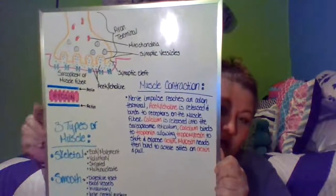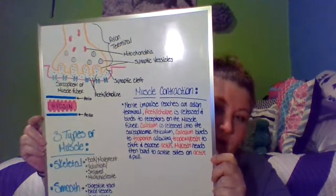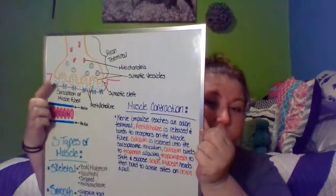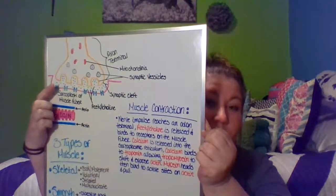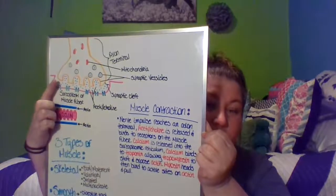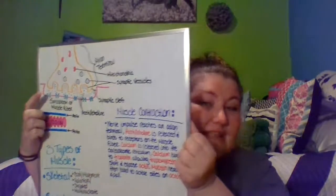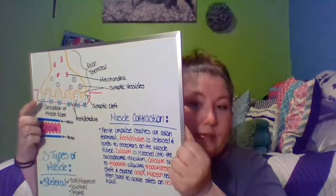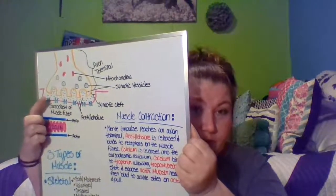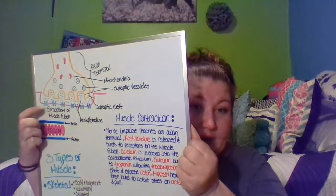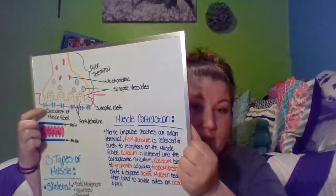For muscle contraction, the nerve impulse reaches the bottom of the axon terminal. When the nerve impulse reaches the end of that terminal, acetylcholine gets released into the space between the end of the axon and the muscle fiber. This space is called the synaptic cleft or neuromuscular junction. Acetylcholine gets released by these synaptic vesicles and binds to receptors on the muscle fiber.